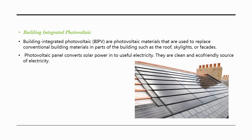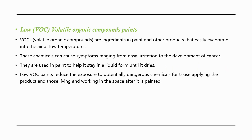Building integrated photovoltaics are photovoltaic materials used to replace conventional building materials in parts of the building such as the roof, skylights, or facades. Photovoltaic panels convert solar power into useful electricity and are a clean, eco-friendly source of electricity. Low VOC paints contain ingredients that easily evaporate into the air at low temperatures, causing symptoms ranging from nasal irritation to cancer. Low VOC paints reduce exposure to potentially dangerous chemicals for those applying the product and those living and working in the space after painting.